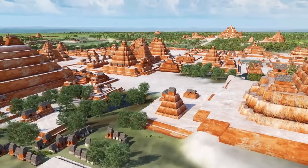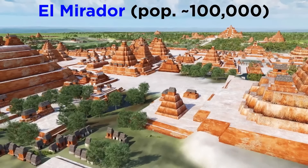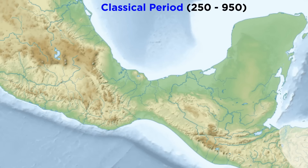The Mayan civilization had some of the largest cities at the time, such as El Mirador in Guatemala with a population as large as 100,000. The next period was the Classical period, from 250 to 950, which marks an apogee of complexity in the region.